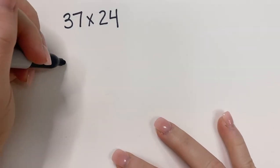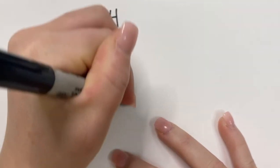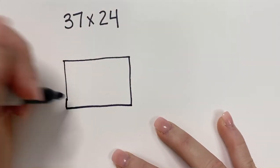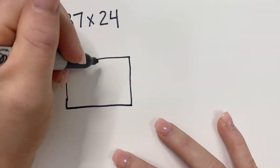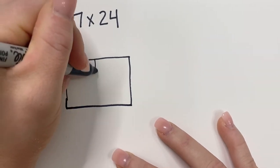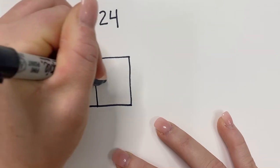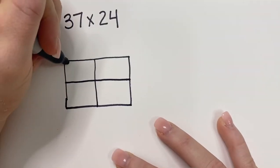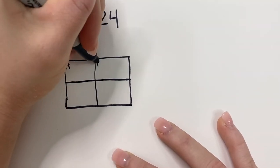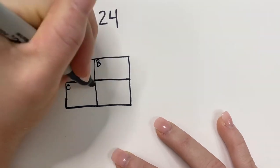So what you're going to do is you're going to physically make a box, and then you're going to divide that box into four quadrants. We have quadrant A, B, C, and D.